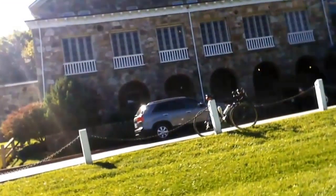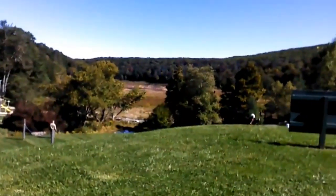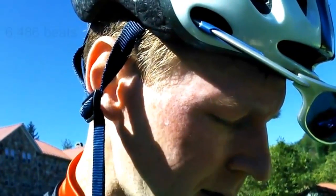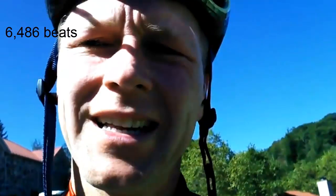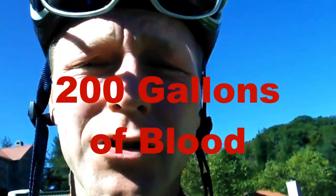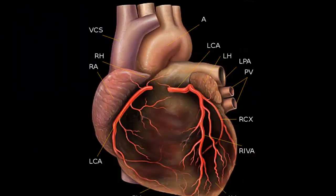We're here at the top of Mountain Lake — what many of you might remember as Kellermans from Dirty Dancing. Out there is the lake, at least what's left of it — nothing more than a big puddle. It took us just under an hour to get up here. My average heart rate for the climb was 143. Doing the math, my heart beat a total of 6,486 times on the climb, meaning my heart pumped out 791,292 milliliters of blood — which equates to about 200 gallons of blood. The coronary arteries are exclusively responsible for providing all of the oxygen needed to pump those 200 gallons of blood.